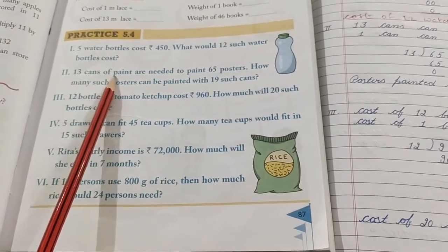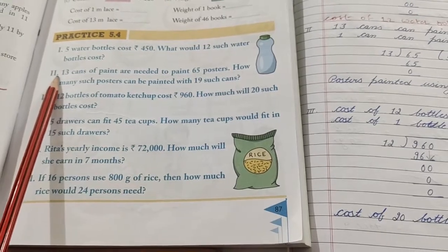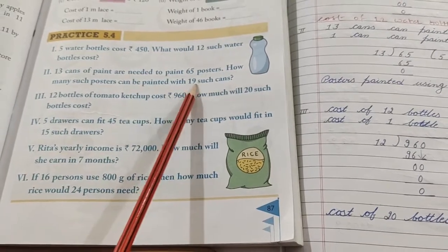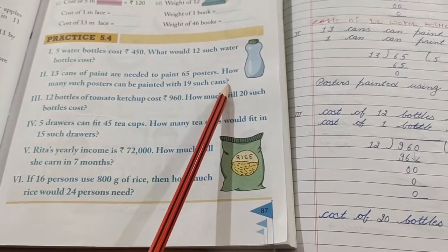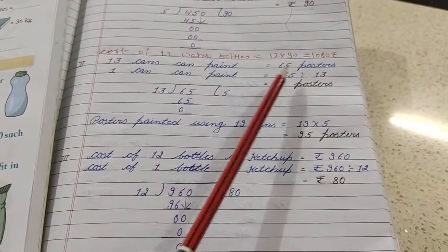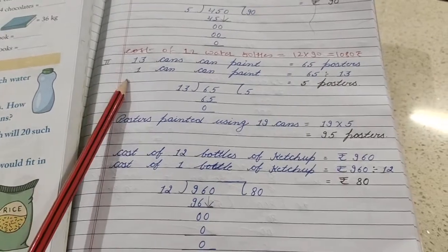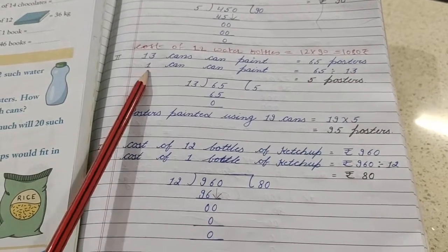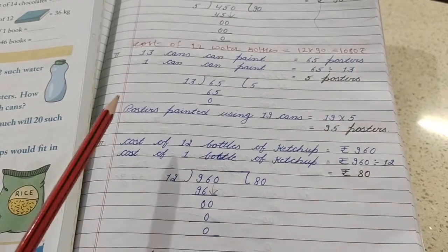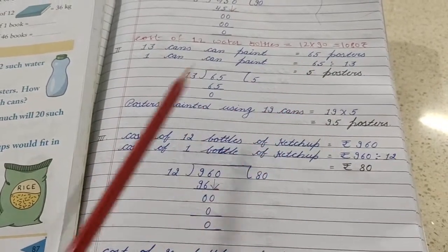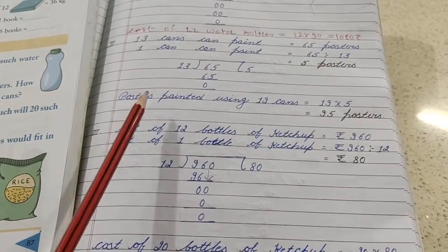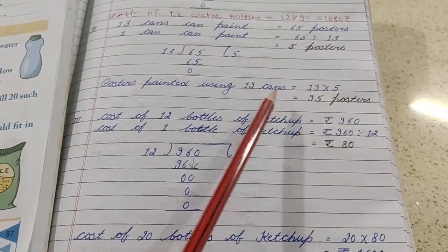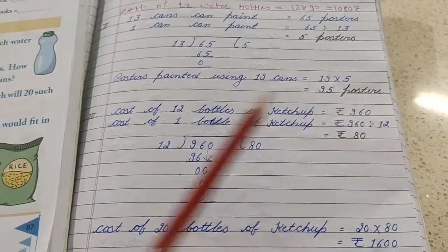Thirteen cans of paint are needed to paint 65 posters. How many posters can be painted with 19 such cans? See, 13 cans can paint 65 posters so we will find out 1 can. 65 divided by 13 equals 5, i.e. 1 can can paint 5 posters. So how many posters can 19 cans paint? Posters painted using 19 cans equals 19 multiplied by 5 equals 95 posters. So this is the answer. See the next sum.